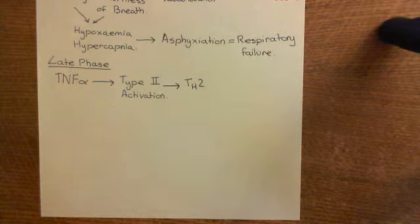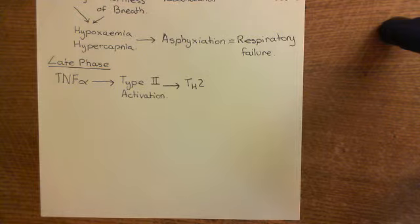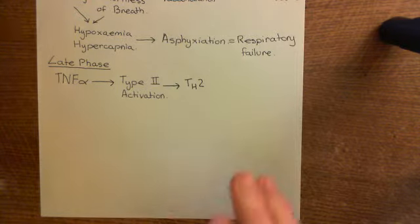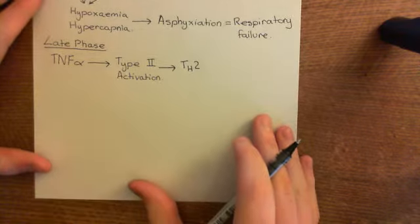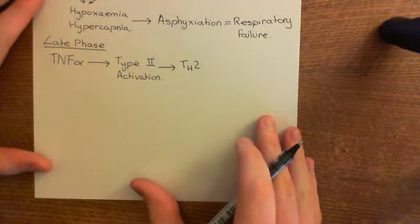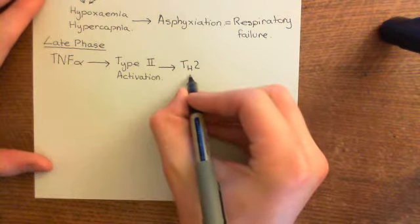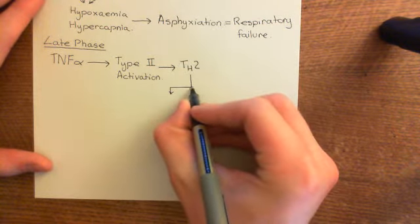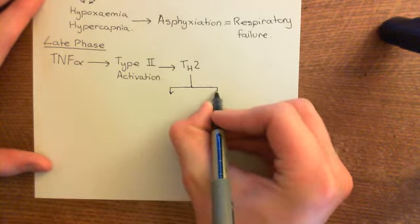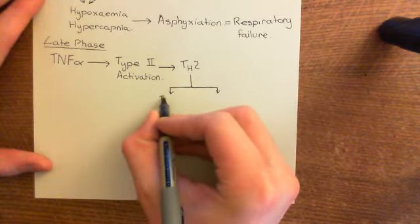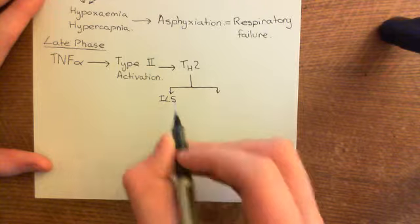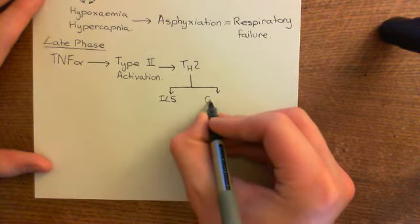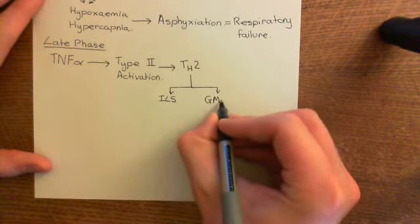They may also be T helper 2 cells primed against some fragment of the allergen. What we do know is that T helper 2 cells from the blood are recruited into the lamina propria. These T helper 2 cells produce two very important pro-inflammatory cytokines: interleukin-5 (IL-5) and GM-CSF (granulocyte-macrophage colony-stimulating factor, also called colony-stimulating factor 2).